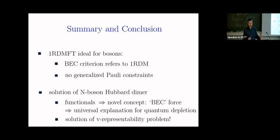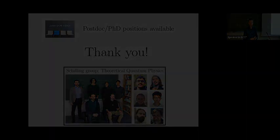Let me summarize. I hope I could make a strong case for one RDMFT in bosonic systems. The BEC criterion for arbitrary systems refers to the one RDM, and there are no generalized Pauli constraints—two important reasons why RDMFT for bosons should be more successful than for fermions. In the Hubbard dimer for bosons, we obtained functionals numerically exact or analytical, established the concept of Bose-Einstein force which can exist in realistic condensates, revealing a universal explanation of quantum depletion independent of microscopic details. We also have a solution of the v-representability problem beyond two particles. Thank you very much for your attention.